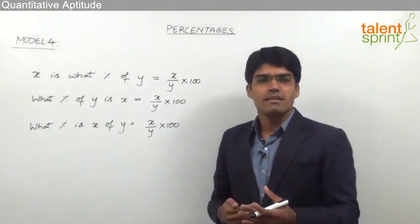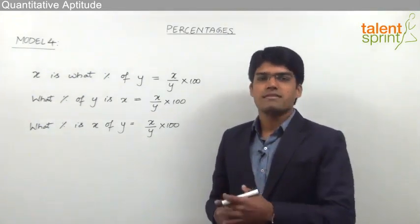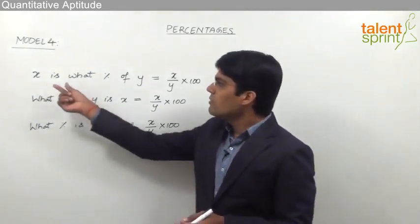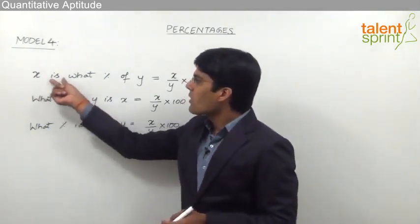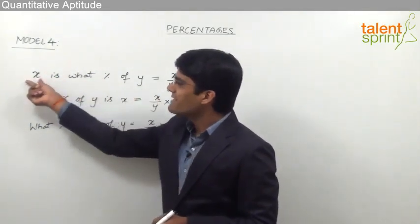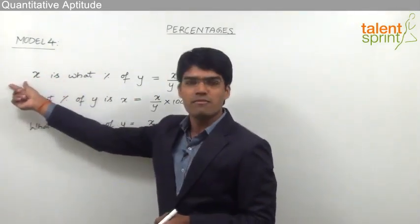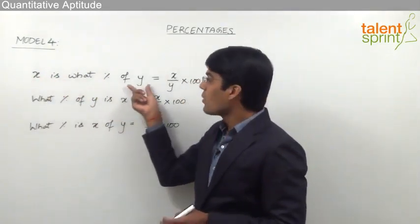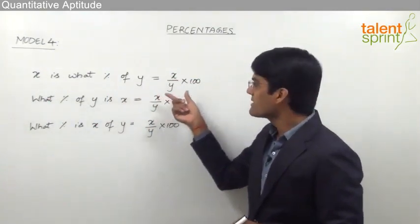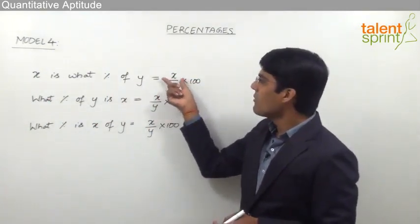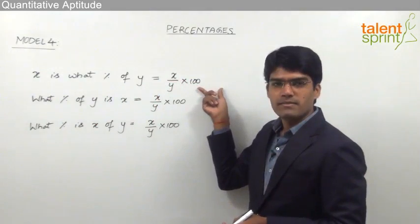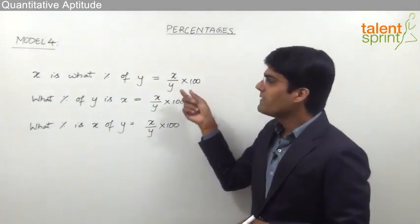For example, let us say we are talking about the strength of a class. The question is: boys are what percent of the total strength? Here x is nothing but the number of boys and y is the total strength, so the answer should be boys divided by the total strength into 100.